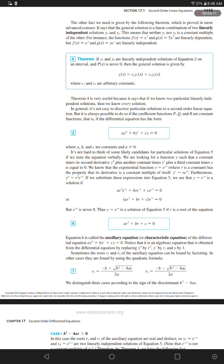Equation 7: r sub 1 equals negative B plus the square root of B squared minus 4AC over 2A, and r sub 2 equals negative B minus the square root of B squared minus 4AC over 2A. We distinguish three cases according to the sign of the discriminant B squared minus 4AC.